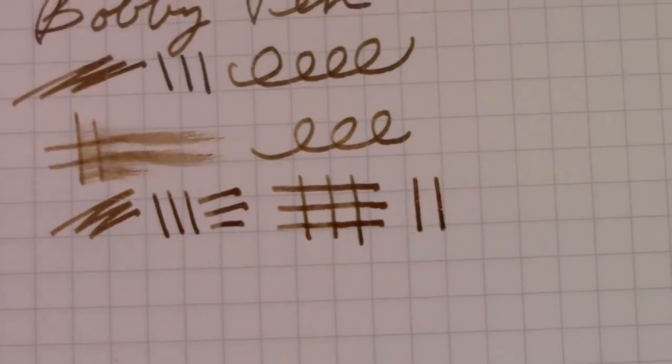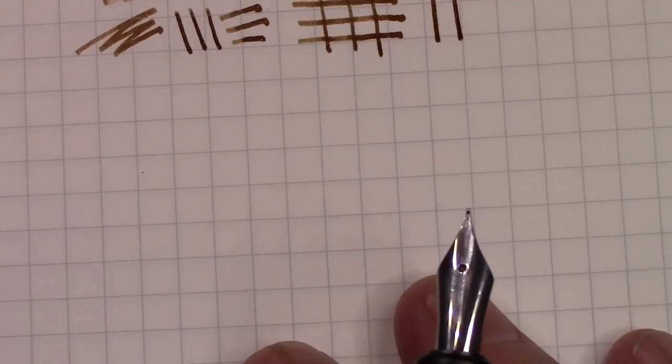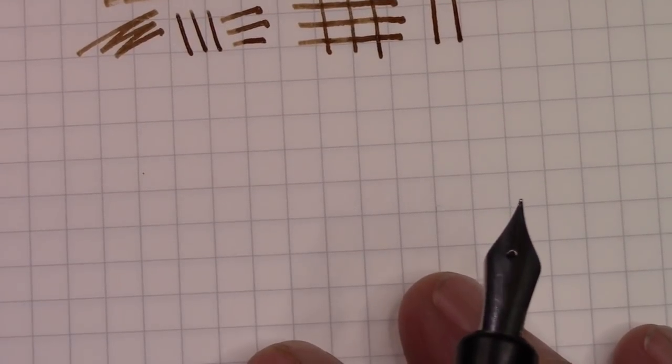So the thing about iron gall ink is it darkens over time so we're going to go back to that after a few minutes and see how fresh ink compares to dried ink.